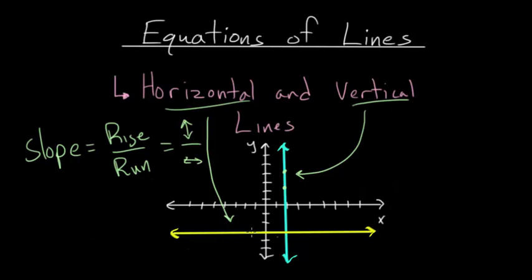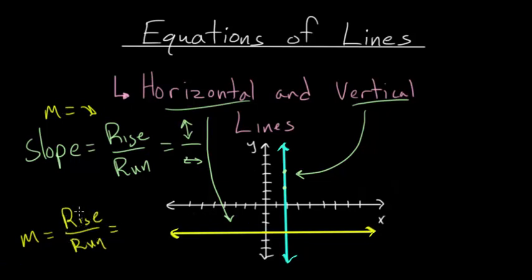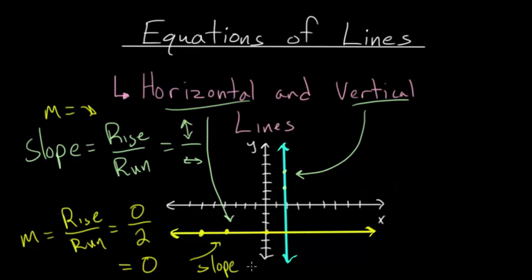Let's start with the horizontal line. The slope, which we usually denote with the letter M, is the rise divided by the run. In this case, the rise would be zero, because if we pick two random points on our line, the line does not go up and down at all. So we have zero divided by the run — in this case, two. Zero divided by anything equals zero, so the slope of a horizontal line is zero.